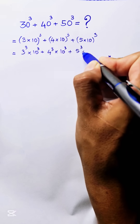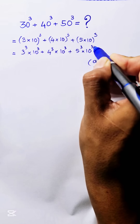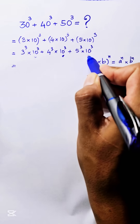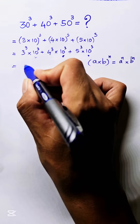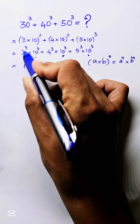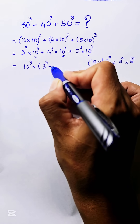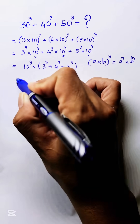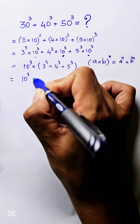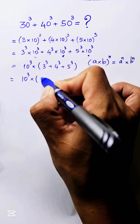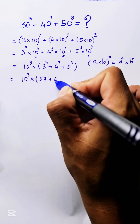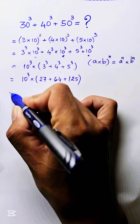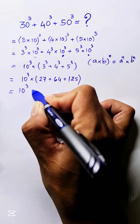We see that 10 power 3 is common, so we take it as a factor. We get 10 power 3 times the quantity 3 power 3 plus 4 power 3 plus 5 power 3, which equals 10 power 3 times 27 plus 64 plus 125.